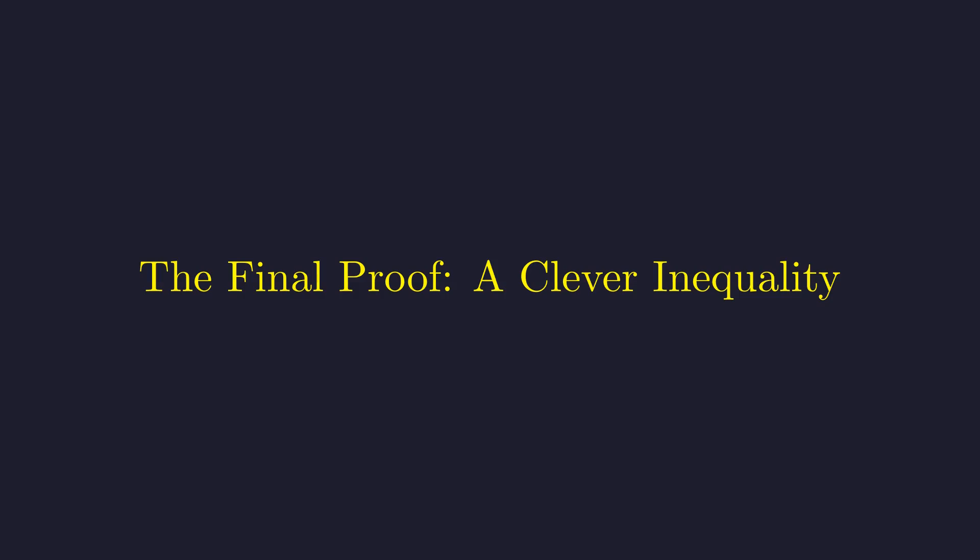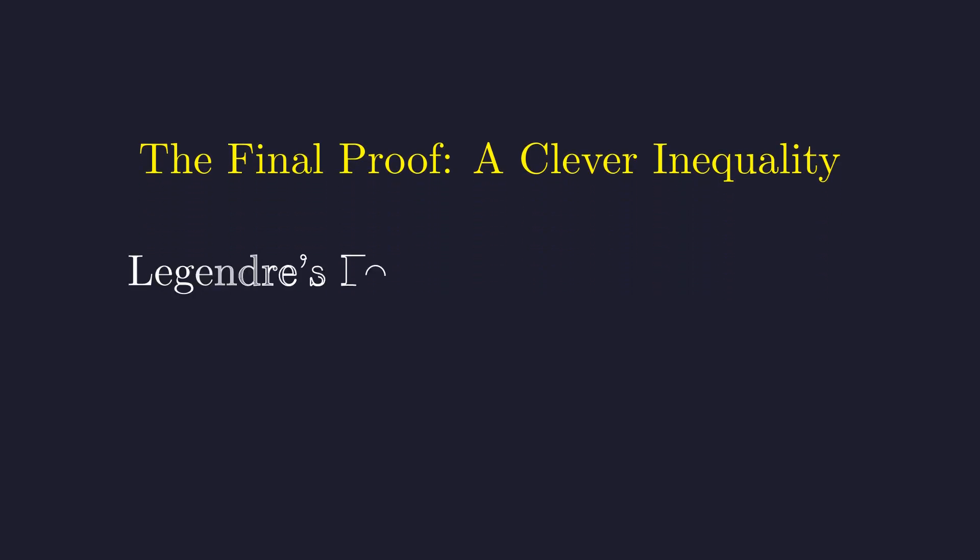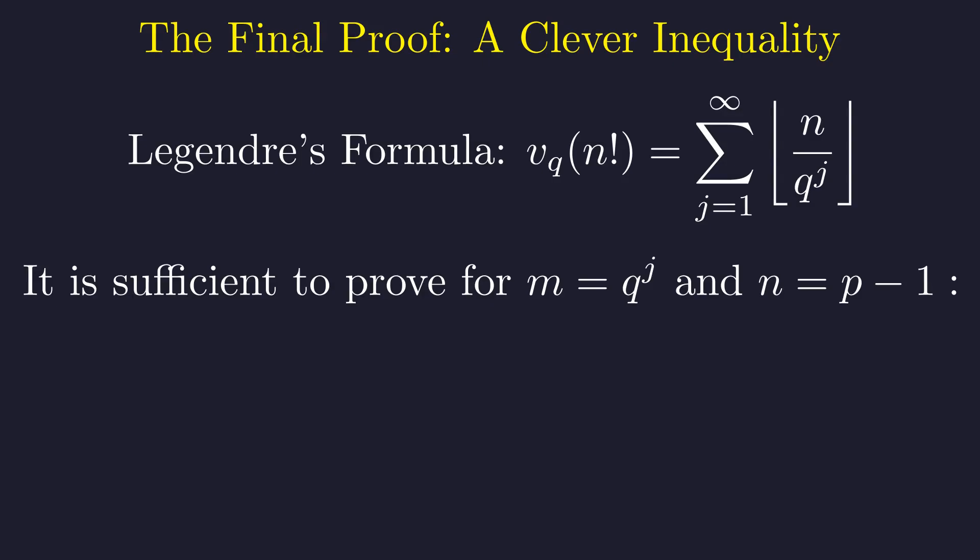We're in the home stretch now. To prove our inequality, we need to dive into the structure of factorial valuations. Fortunately, number theory gives us exactly the tool we need: Legendre's formula is one of those beautiful results that makes explicit something that might seem mysterious. It tells us exactly how many times a prime q divides n factorial. The idea is elegant—we count multiples of q, then multiples of q squared, then q cubed, and so on.